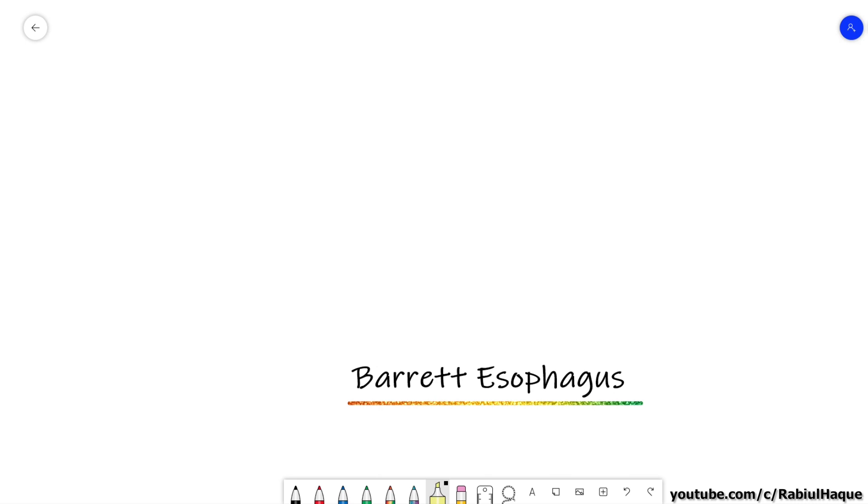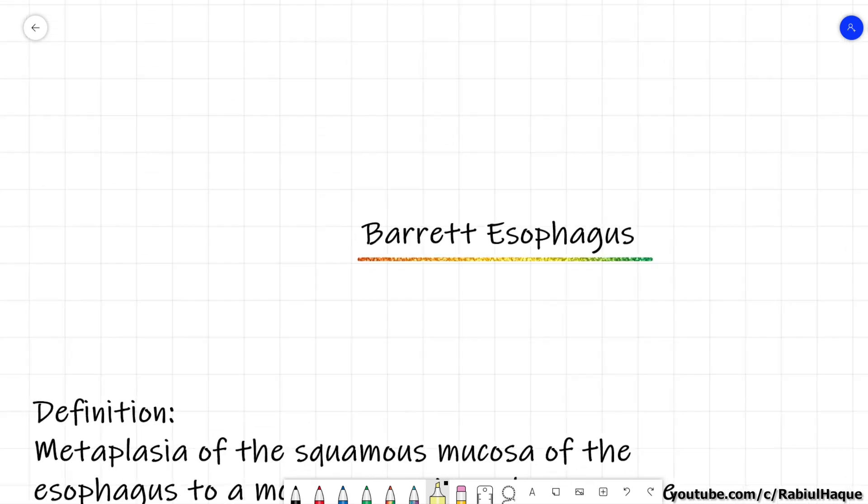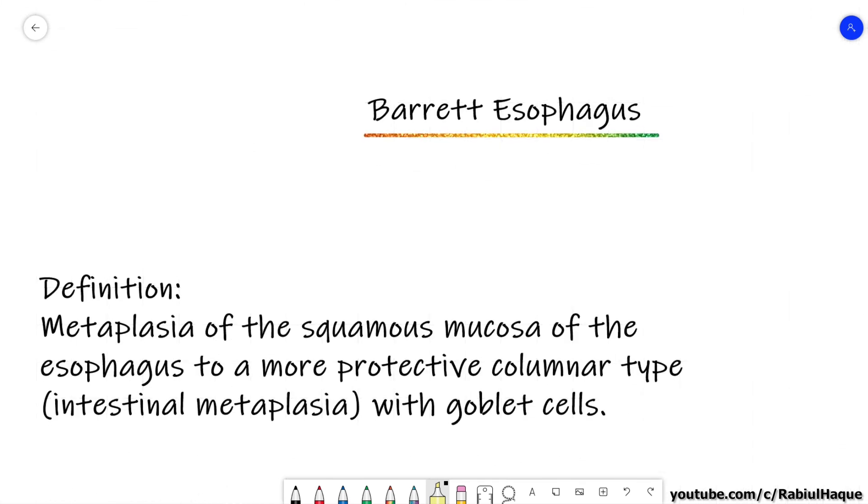First question: what do we mean by Barrett esophagus? As written in your textbook, Barrett esophagus may be defined as a metaplasia of squamous mucosa of the esophagus to a more protective columnar type along with goblet cells. I am repeating this definition one more time. Barrett esophagus may be defined as metaplasia of the squamous mucosa of esophagus to a more protective columnar type with goblet cells.